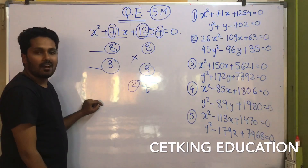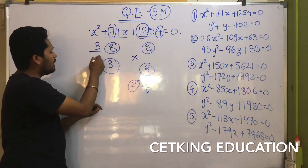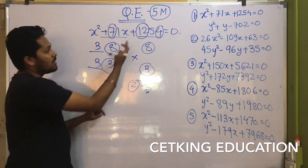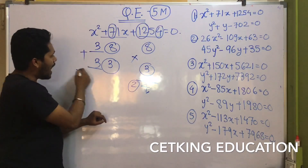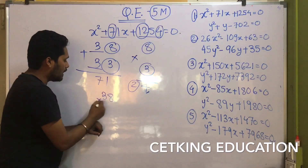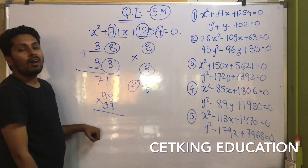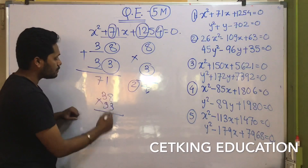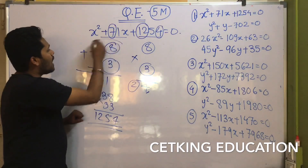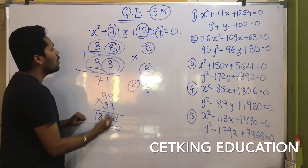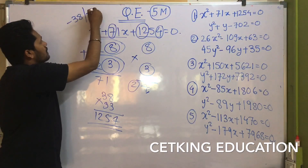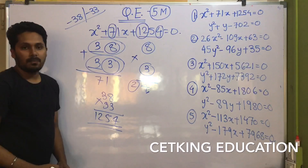Roughly, let's try 3 and 3: 3 + 3 = 6, and 3 × 3 = 9 which is less than 12. So the addition should be 71. Let's try 38 × 33 = 1254. Yes, it gives 1254. So your factors are 38 and 33. Obviously since we have plus 71, the factors are minus 38 and minus 33. Simple.